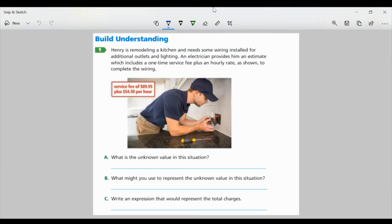All right, so let's look at page 224, task 1. Henry is remodeling a kitchen and needs some wiring installed for additional outlets and lighting. An electrician provides him an estimate which includes a one-time service fee plus an hourly rate as shown to complete the wiring. So we have our service fee of $89.95 plus $54.50 per hour.